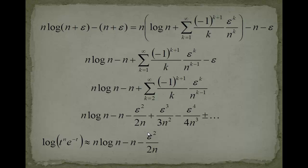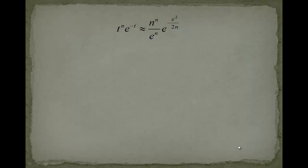Now what I will do, I will exponentiate here on both sides in order to get this expression t to the n e to the minus t is approximately equal to, now you can use all the exponential laws and you will see that this is equal to n to the n over e to the n times e to the minus epsilon squared over 2n. And what we will do ultimately is we will plug this expression into our integral.